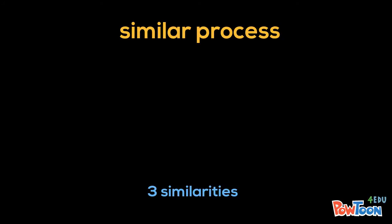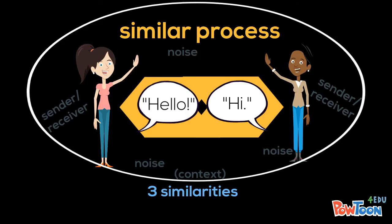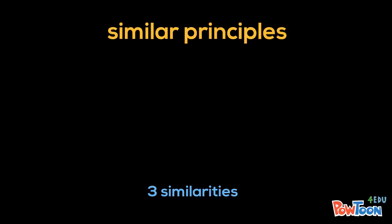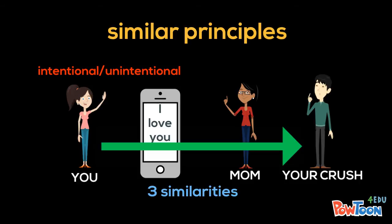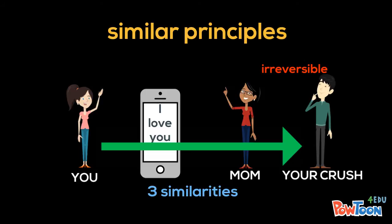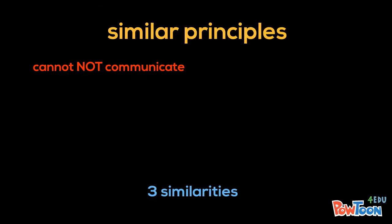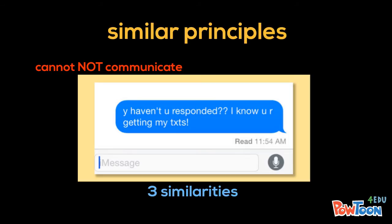Mediated and face-to-face communication also have a similar process. Think about the components of the communication model as we discussed in Chapter 1 — all these components are still relevant when you send someone a text or update your Facebook status. Mediated and face-to-face communication also have similar principles. Recall that communication can be intentional or unintentional. For example, think of when you accidentally send a text message to the wrong person. This can lead to the second principle that communication is irreversible — once you've sent that text message, there's no way to get it back. It is also impossible not to communicate via mediated communication. Think about when you don't respond to a text message; the person who texted you may interpret your silence as you being busy or that you're ignoring them.